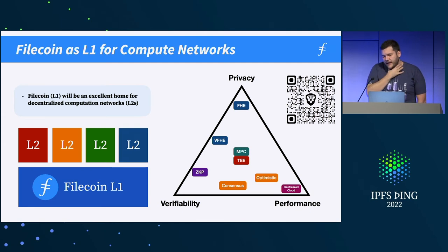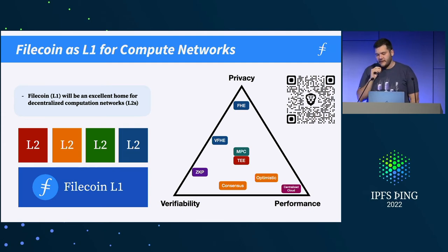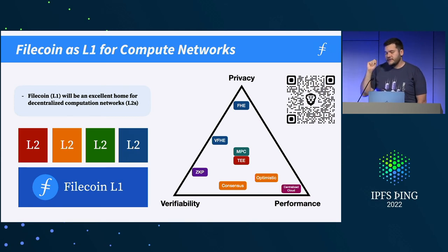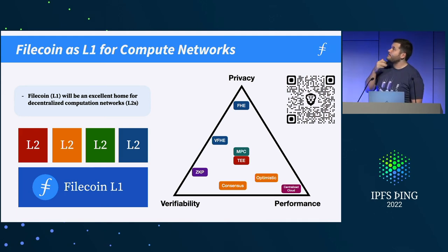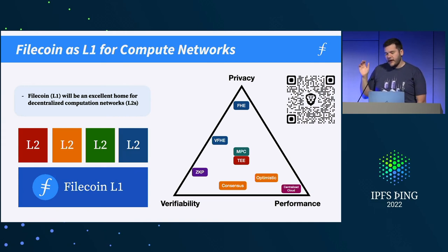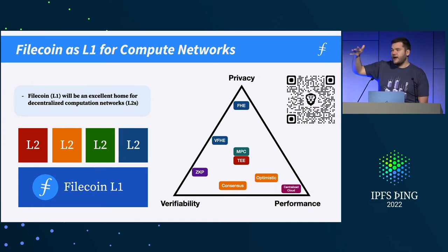It's worth mentioning that there's a whole swath of computational networks that will emerge in a cryptographic setting — either doing zero-knowledge computation or fully homomorphic encryption. Over the next couple of years, they're going to develop and appear. These are different computational models, but for the most part they're compilable down to WASM.